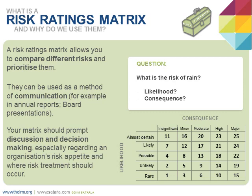Moving on to our risk ratings matrix and why we use them. The risk ratings matrix is the primary method used in many companies for ranking and prioritizing risks. The problem with a risk matrix comes when it is not tailored to your organization — people then arbitrarily rate risks based on their own interpretations, or ensure that negative risks sit below the threshold at which some action is required.